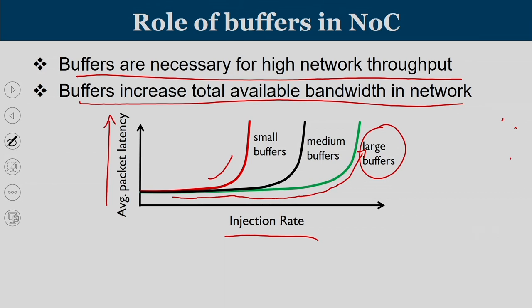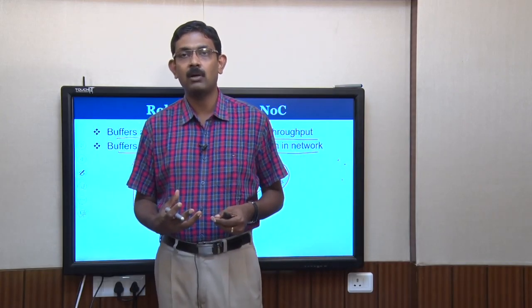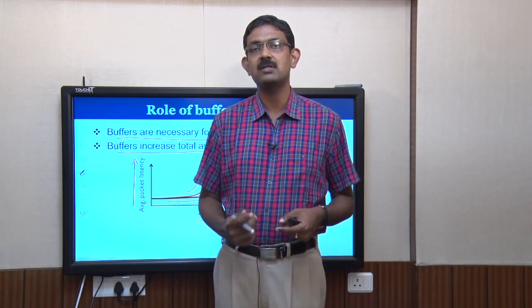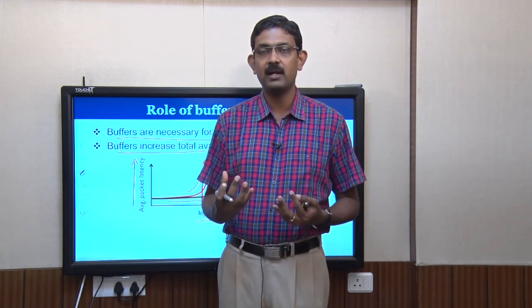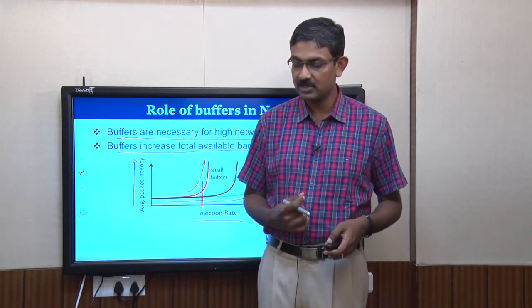If you do not have any buffers, the network saturates early. The point where latency goes into a sudden exponential increase is known as the saturation injection rate. When you have very few buffers, the network saturates early; when you have more buffers, the network saturates later, meaning it can accommodate more packets. So buffers play a significant role in NOC performance — more buffers means more packets can be accommodated and can make forward progress.